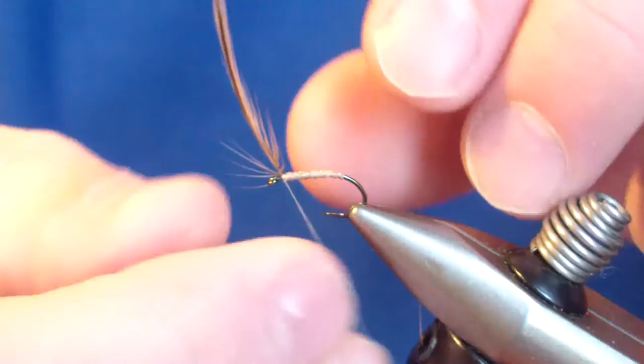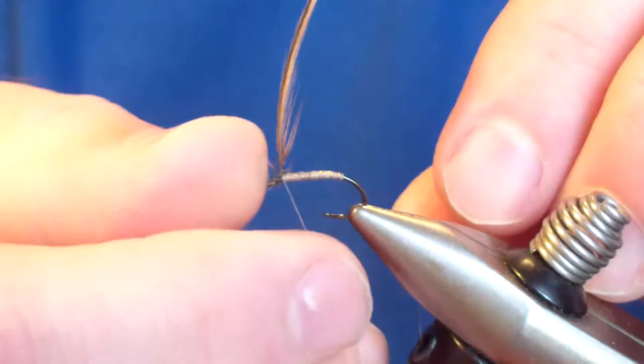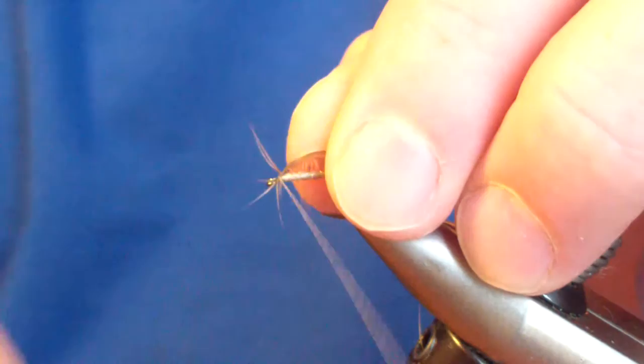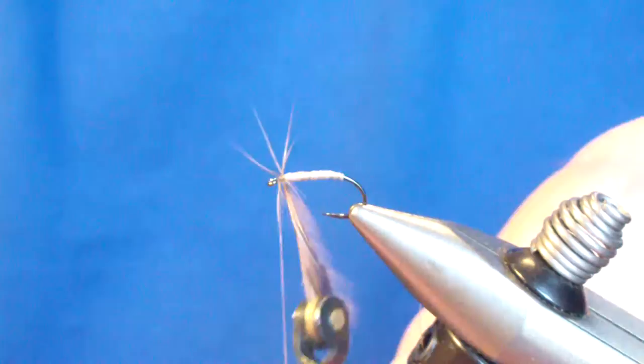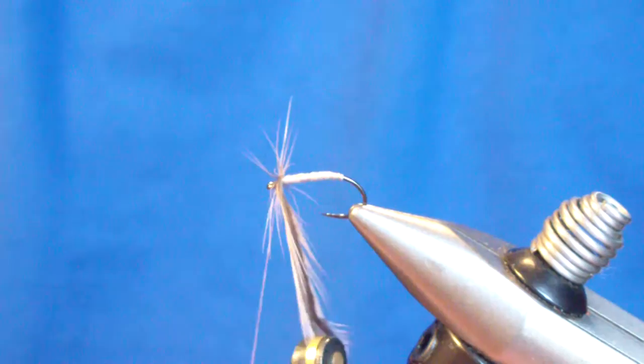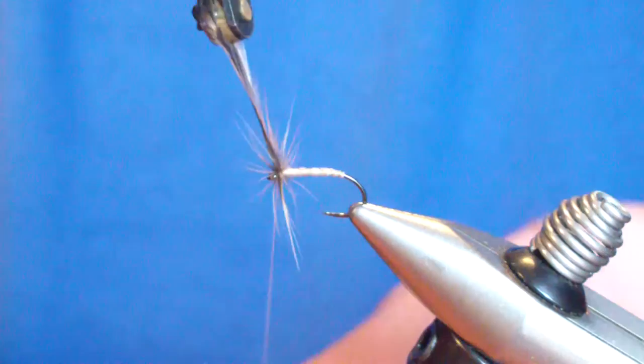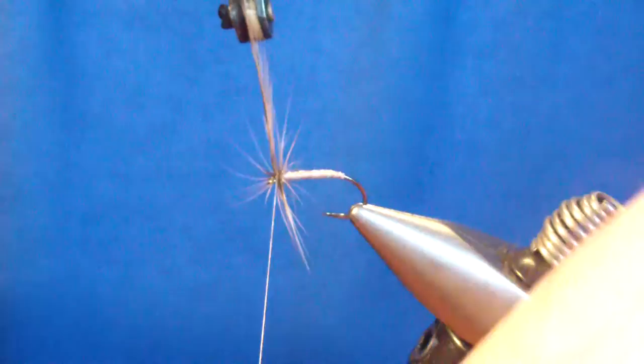At this point I like to put a slight kink in the feather, and I bring my thread two turns in front. And I grab with my hackle pliers. We're going to stay in front of the thread. We're going to put three turns, and on the third turn we're going to bring it up top and tie off.